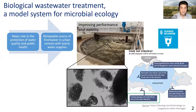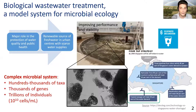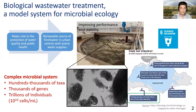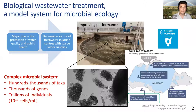Wastewater treatment plants harbor complex microbial communities made up of trillions of living individual organisms from hundreds to thousands of different taxa. The flocs visible in this microscopy image are made by bacteria and extracellular polymeric substances, which segregate to form aggregates called flocs, giving them multiple advantages similar to a biofilm lifestyle, such as protection from grazers.